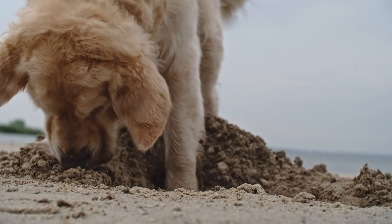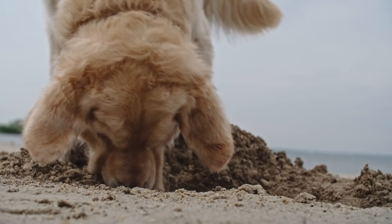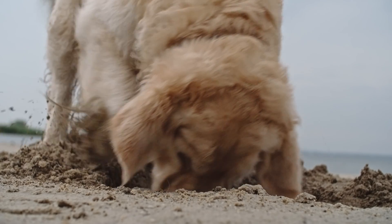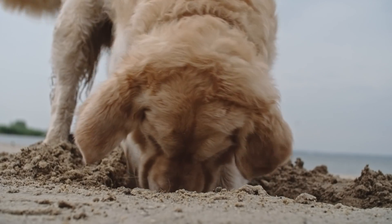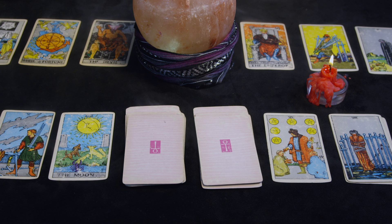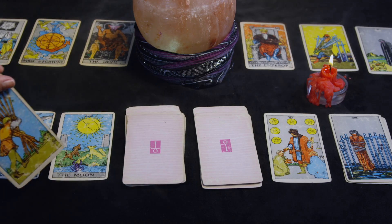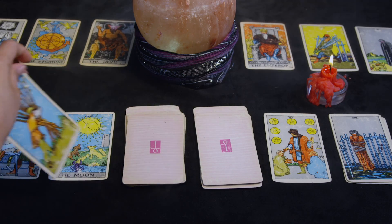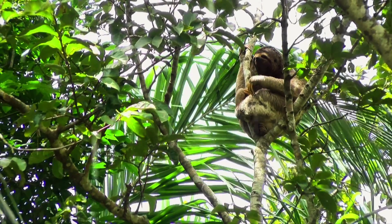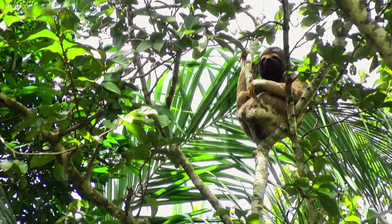For example, all dogs know how to dig holes. A dog does not have to practice digging a hole — it can dig a hole the first time it tries and will continue to dig holes in the same way for its entire life. Innate behaviors are sometimes called instincts, and they are predictable, meaning we can guess what will happen.